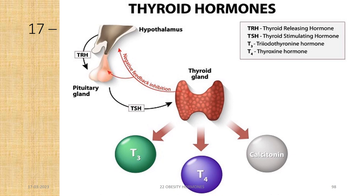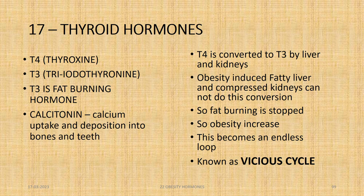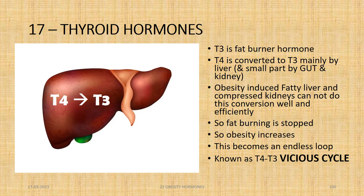Another set of hormones associated with obesity is thyroid hormones: T3, T4, and calcitonin. The thyroid gland secretes T4 (thyroxine), which is then converted into T3 (triiodothyronine) — our fat-burning hormone — mainly by the liver and partly by the gut and kidneys. Calcitonin regulates calcium uptake and deposition into bones and teeth. Obesity-induced fatty liver and compressed kidneys cannot perform this T4-to-T3 conversion well, so fat burning is stopped or decreased — an endless loop known as the T4-T3 vicious cycle.